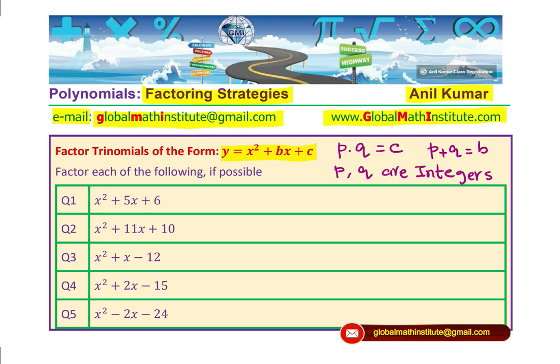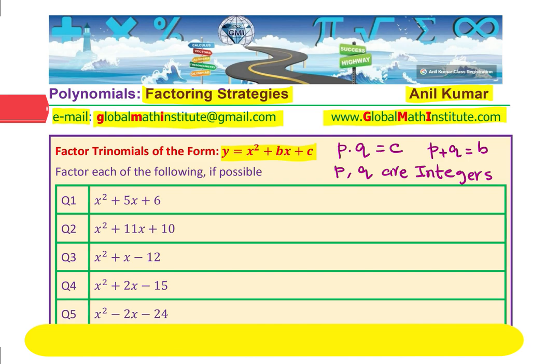Remember that all trinomials cannot be factored. Sometimes the condition is if only. I have taken examples which can be factored. The key here is to find two numbers whose product is this constant, and the sum should be coefficient of x.